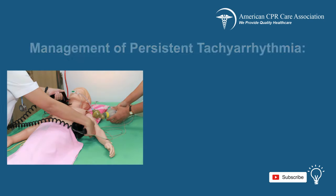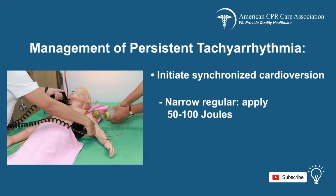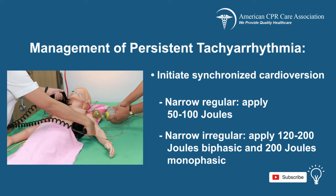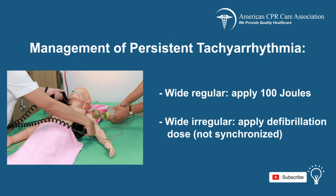For management of the patient, if persistent tachyarrhythmia has been diagnosed, you need to initiate synchronized cardioversion in the following doses depending on the diagnosis classification. For narrow regular, apply 50 to 100 joules. For narrow irregular, apply 120 to 200 joules biphasic and 200 joules monophasic. For wide regular, apply 100 joules. And for wide irregular, apply the defibrillation dose.